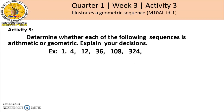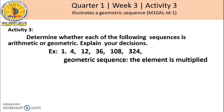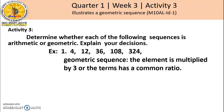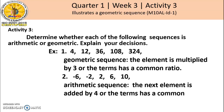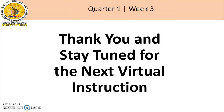For activity 3, determine whether each of the following sequences is arithmetic or geometric and explain your decision. Number 1: the sequence 4, 12, 36, 108, 324 — it is a geometric sequence because each element is multiplied by 3, or the terms have a common ratio of 3. Number 2: the sequence negative 6, negative 2, positive 2, positive 6, positive 10 — it is an arithmetic sequence because the next element is added by 4, or the terms have a common difference of 4. Thank you and stay tuned for the next virtual instruction.